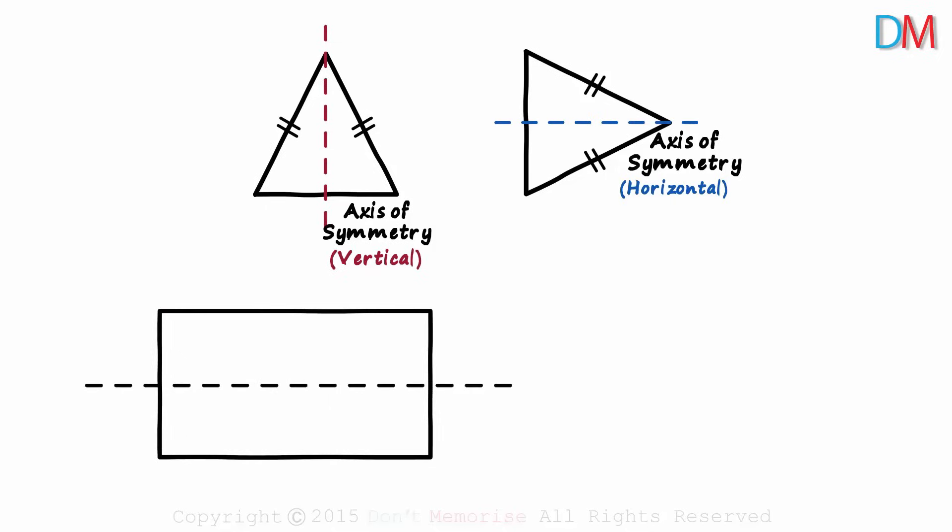And it will also have a vertical symmetry like this. Flip this part and we see the perfect overlap. So a rectangle has a horizontal as well as a vertical line of symmetry.